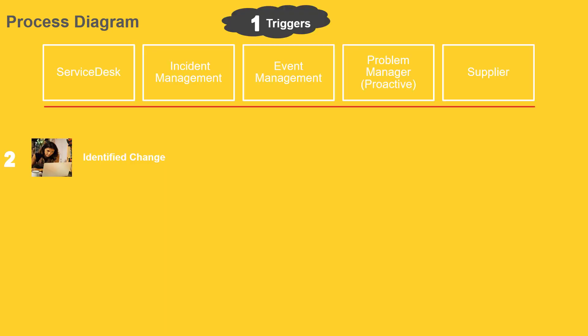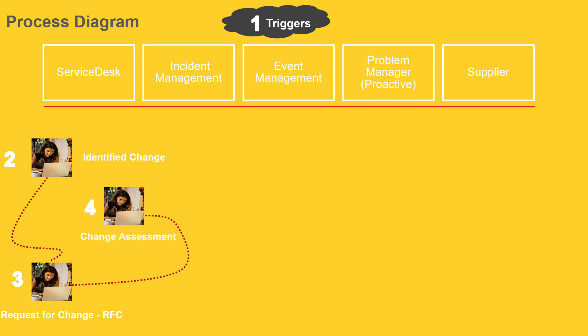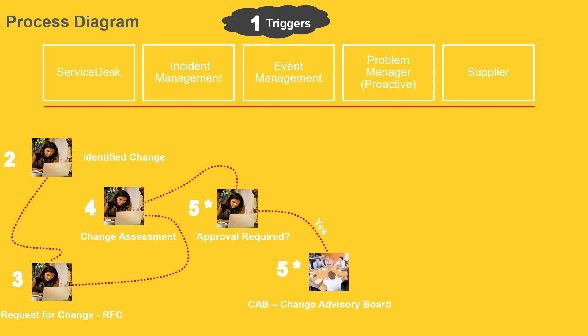Back to our process diagram: let us assume that a change request has been identified and raised. The RFC can be created by the change manager himself — which is the best practice — or by other process owners if the system is configured that way. After having it created, he will assess the change by looking at different fields such as priority, category, subcategory, and many others. Right after this step, if the change is normal or an emergency one, it will require approval from the change authority or the CAB team; if not, it will automatically skip to the next step which is scheduling.